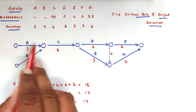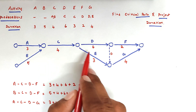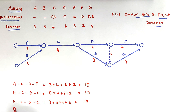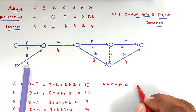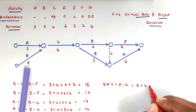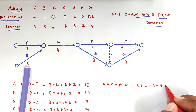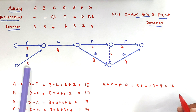Path A, C, E, G has a duration of 3 plus 4 plus 3 plus 4, which equals 14. Then path B, C, E, G has a duration of 5 plus 4 plus 3 plus 4, which equals 16.